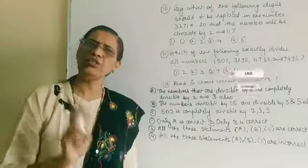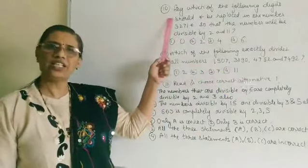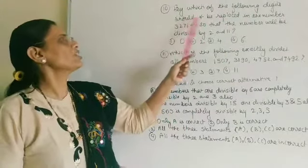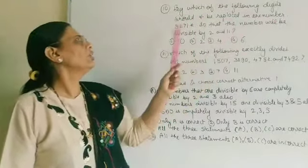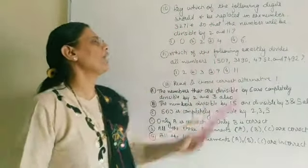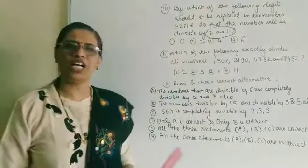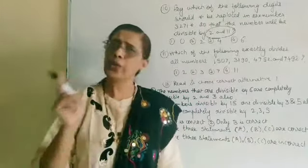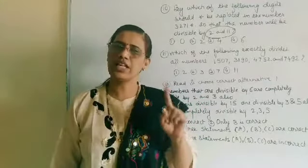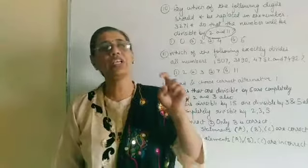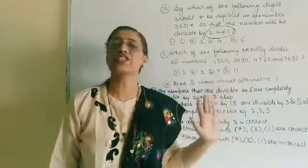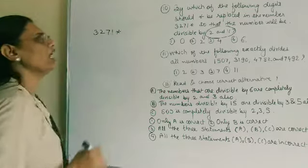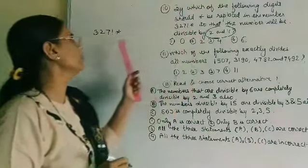One important thing: the ninth question is modified, so we are taking the tenth example. Tenth example: by which digit should star be replaced in the number 3271★ so that the number is divisible by both 2 and 11? You should know the divisibility tests for 2 to 11. The number is 3271★, and we need this number to satisfy both divisibility by 2 and divisibility by 11.